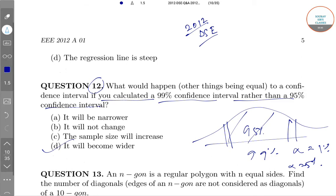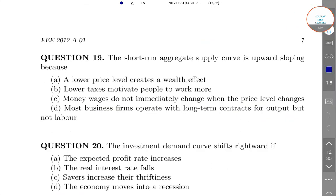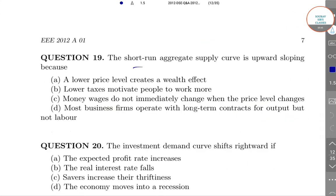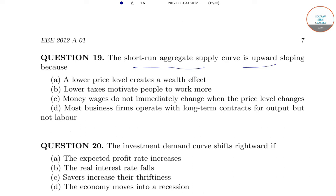Now, moving to question number 19. In question number 19, we can see: the short-term aggregate supply curve is upward sloping for which region? The lower price level creates a wealth effect. The lower taxes motivate people to work more. The money wages do not immediately change when the price level changes, and most business firms operate with long-term contracts for output but not labor.